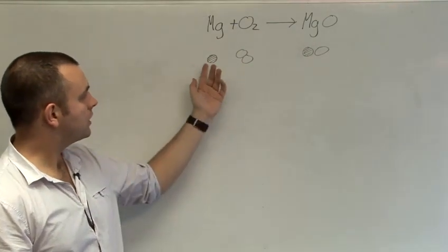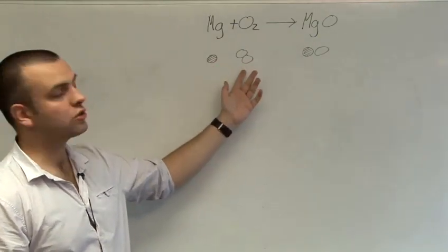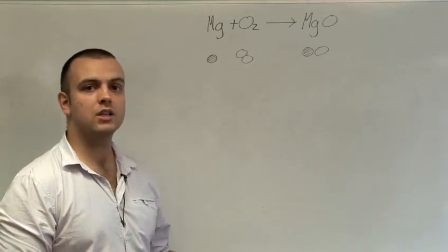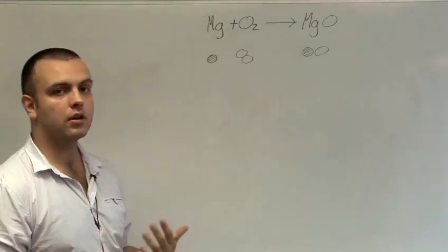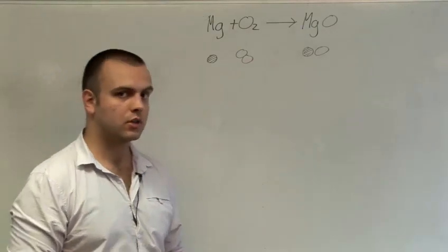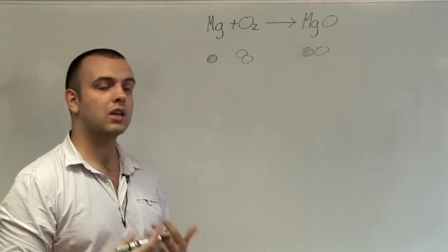If you look at what's happening with the atoms, a magnesium atom reacts with an oxygen molecule to give a magnesium oxide molecule. The problem here is that one of the atoms of oxygen has gone missing and this can't happen in chemical equations.